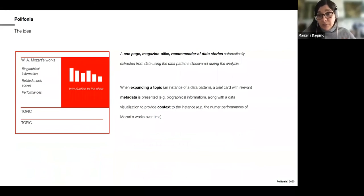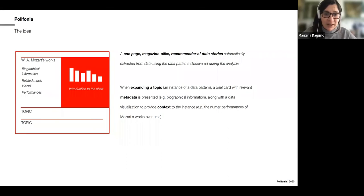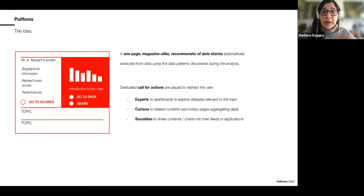We give details on demand: while looking at a specific instance of a data pattern, you'll see bibliographic information and data visualizations contextualizing this information within the whole dataset, showing connections to other parts. You'll also have calls for action targeting different user types — curious people can look for related contents, experts can go to the dashboards, and socialites can share the chart or piece of information they found.